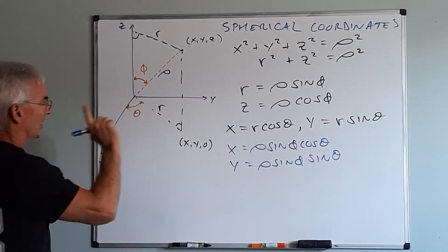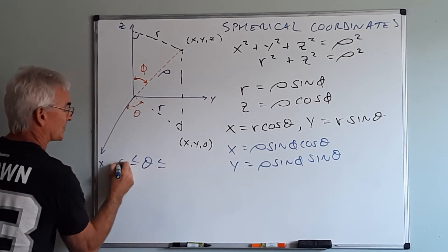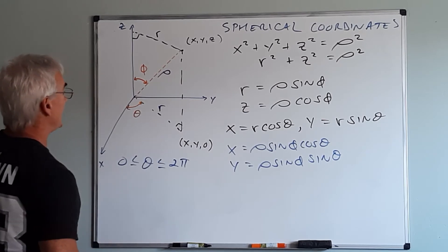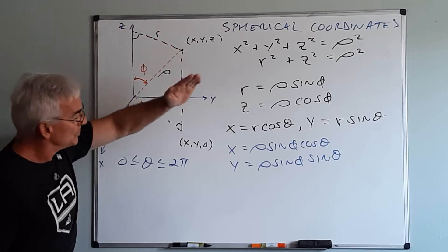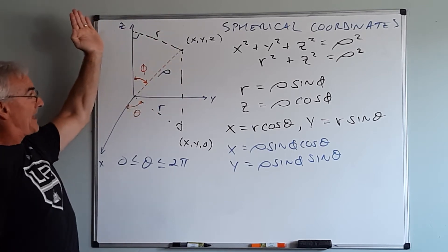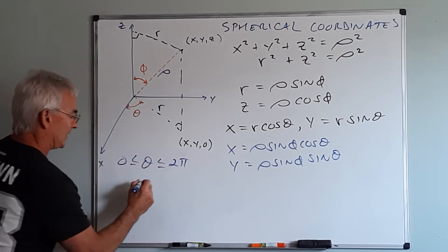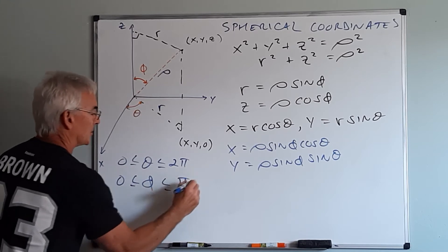Well theta is just like before, it's on the xy plane only, so theta potentially can always range between 0 and 2 pi. Now phi is the angle made with the z axis to this segment, and that means that it can go from here all the way down, so phi has a potential range then of 0 to pi.